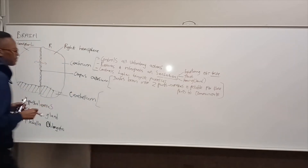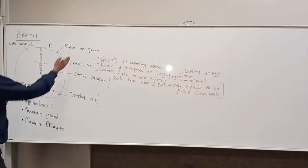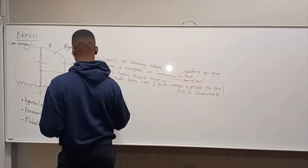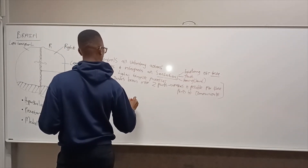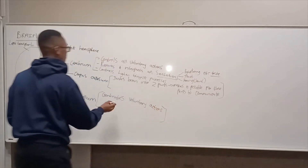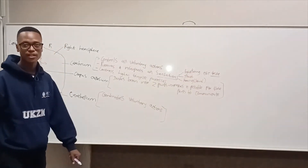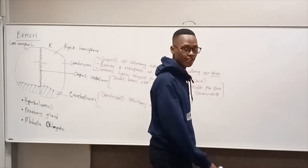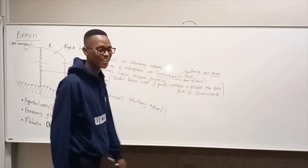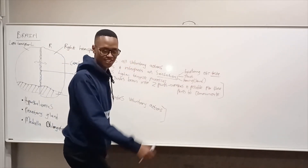Now the functions of the cerebellum, which is different from the cerebrum. The cerebellum coordinates all voluntary actions — it makes the actions synchronised. For example, when I walk, my actions are coordinated: when my right leg goes forward, my left hand also goes forward. That coordination is what the cerebellum controls.